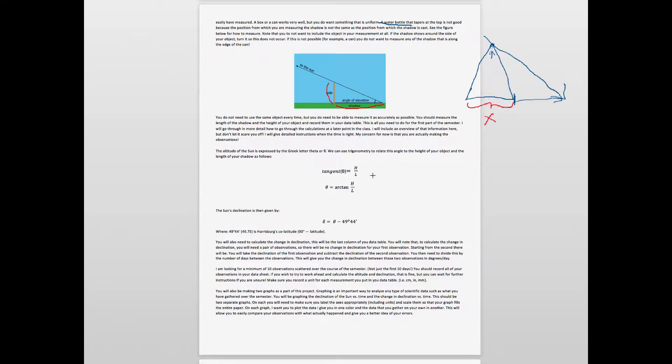I include some of the information needed for the calculations here. You're going to use this to do the calculations but this is done later. You do not have to worry about that right now. We will come back to that later in the semester and there will be additional videos explaining how to do this. I'm looking for 10 observations scattered over the course of the semester, not just the first 10 clear days. You want it spread over at least a couple of months to get the best values possible.